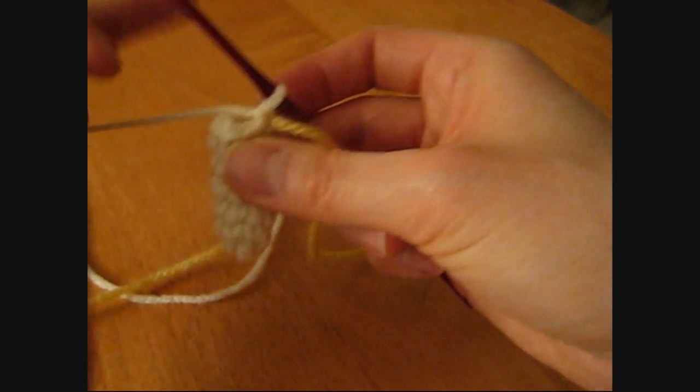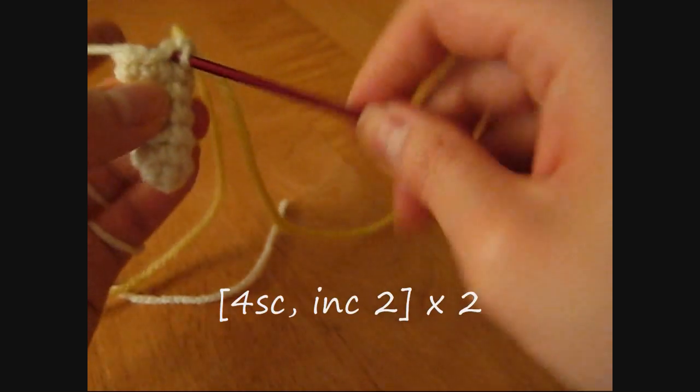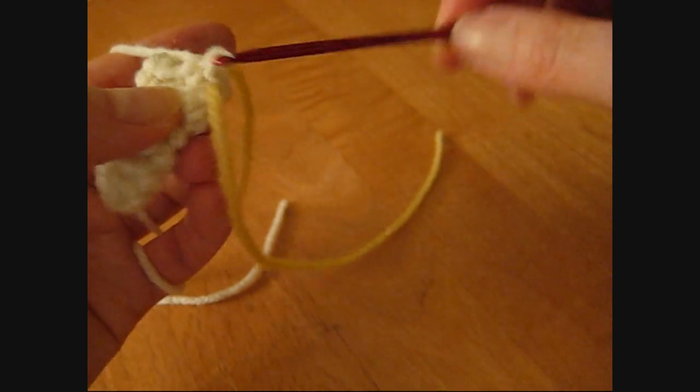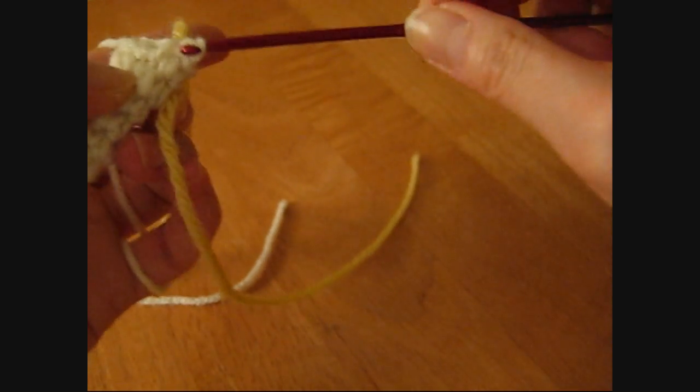Next, do 1 single crochet in the 1st, 2nd, 3rd and 4th stitch. Then do 2 single crochets in the 5th stitch. Repeat the sequence 2 times.